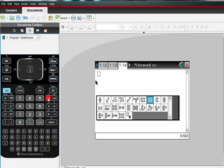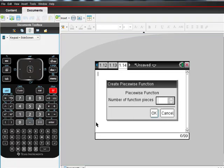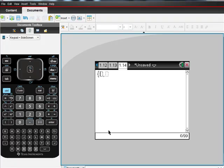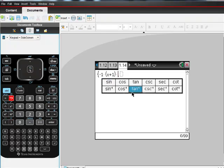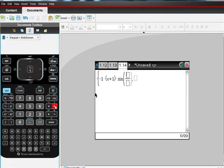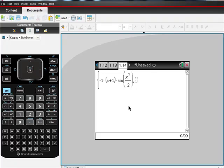Piecewise functions are right in this little directory right here. You see brackets that look like this, it's their piecewise function. It asks you how many pieces you want, you just want one piece here and then I'm going to put in negative 1 times the quantity (x+1) times sine. You can put in sine lots of different ways, you can type it in or you can just go here and put it in as sine.